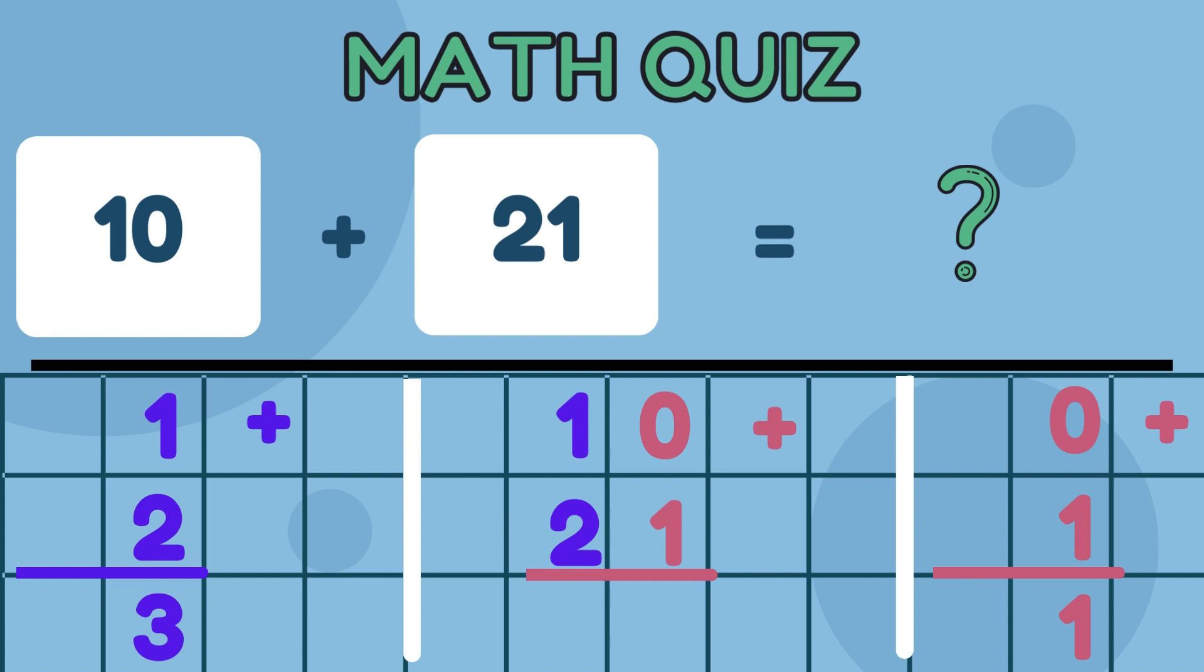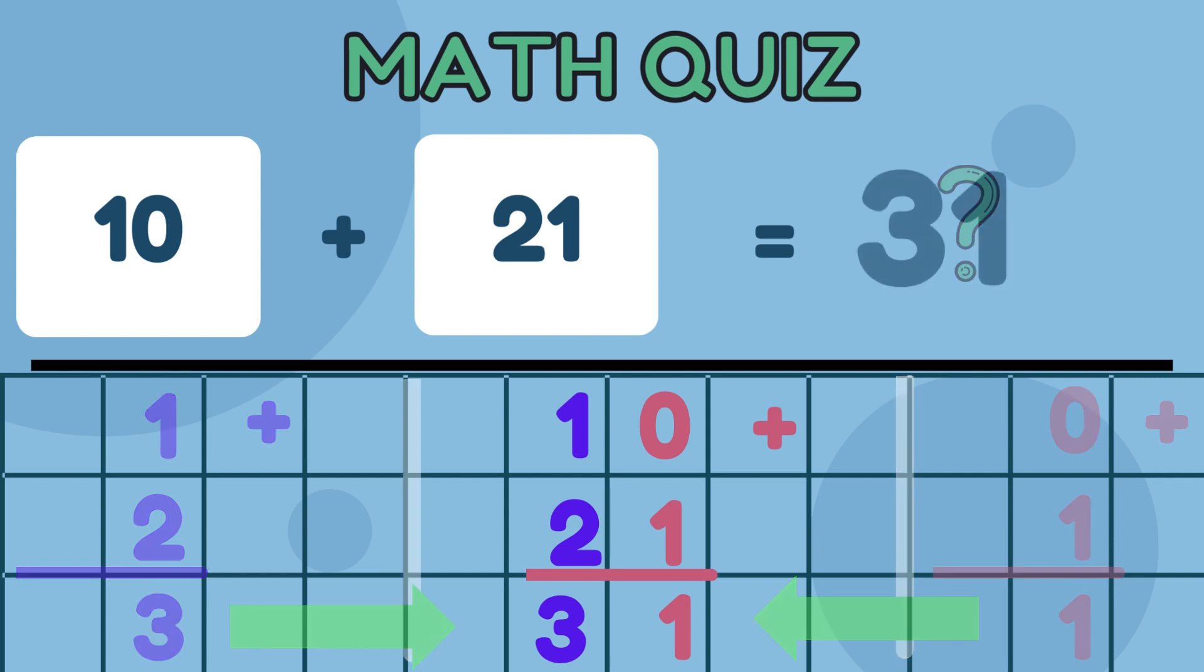Now, add the digits in the 10's place. 1 plus 2 equals 3. Step 3. Write down the result for each place value. The sum in the 1's place is 1, and the sum in the 10's place is 3. Step 4.